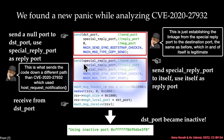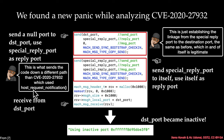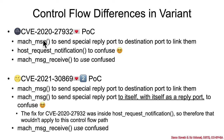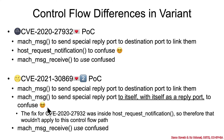But this mach_msg_send here is going to send down a different control flow path that also causes type confusion without the need to invoke host_request_notification — that's what makes this a different variant. The previous one called mach_msg to send a special reply port to a destination, causing the linkage, then called host_request_notification to confuse, then mach_msg_receive to use the confused data. The difference here is mach_msg sends the special reply port to itself, with itself as the reply port — a weird usage case that leads to confusion.